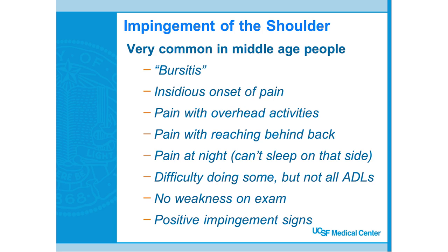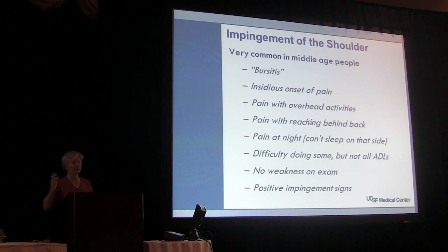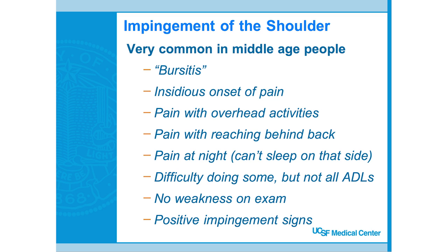Insidious onset of pain, generally with overhead activities. Patients often have pain reaching behind their back, a small amount of stiffness but nothing like frozen shoulder or arthritis, and pain lying on the side sleeping at night — especially with the arm over the head. They have difficulty with overhead activities, no weakness on rotator cuff exam, and positive impingement signs, which Dr. Feely will demonstrate.